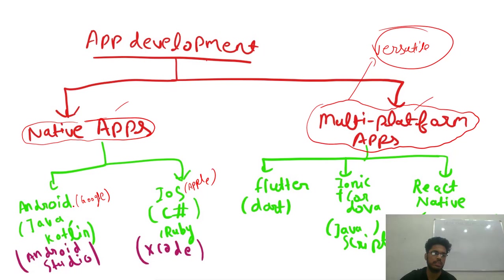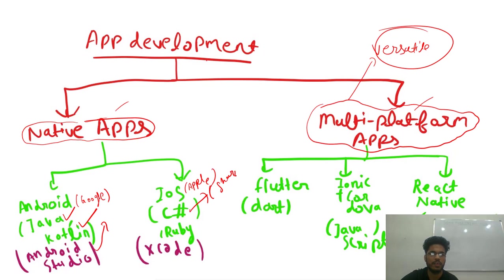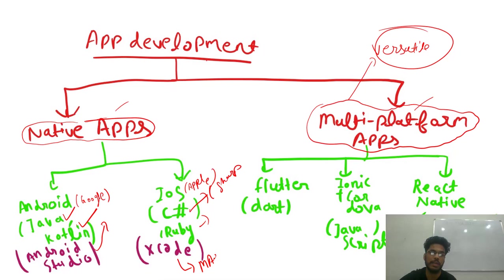Android apps are developed using either Java or Kotlin, and for that we need the software known as Android Studio. For iOS, we develop using C# and the software needed is Xcode, which only runs on Mac OS. So it is a must that if you want to develop an app for iOS, you need to have a Mac operating system — without it you can't develop.